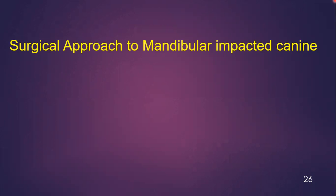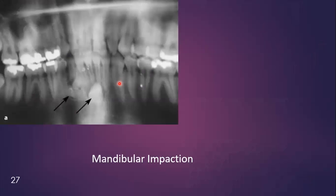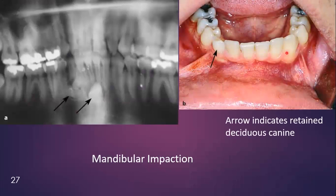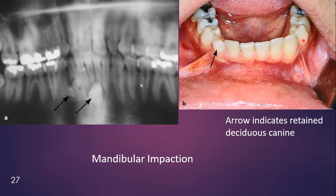Now let's see the surgical approach to the mandibular impacted canine. The most common surgical approach is the labial approach. In this radiograph, you can see an impacted mandibular canine, and you can also appreciate the presence of an odontome. In the clinical picture, you can see the retained deciduous canine on the right side, while the permanent canine is present on the left side. This means that the impacted canine is the right canine, which should be removed at the end of the surgery.